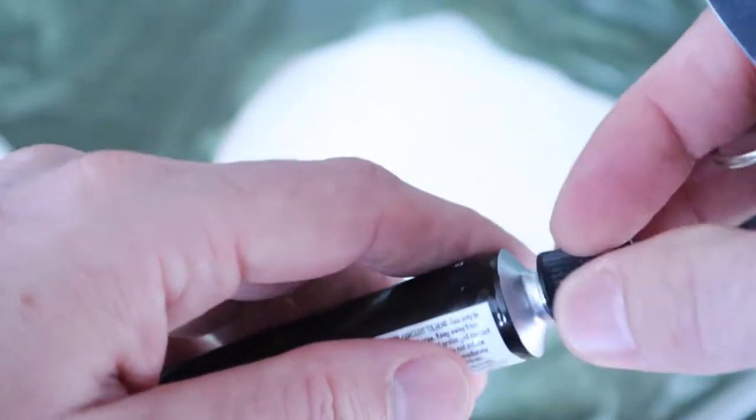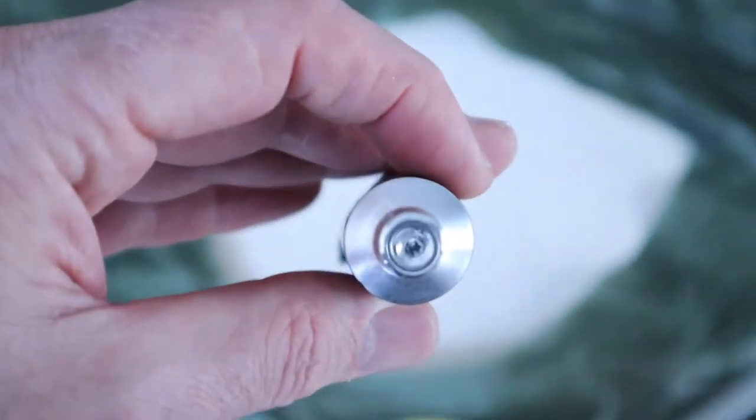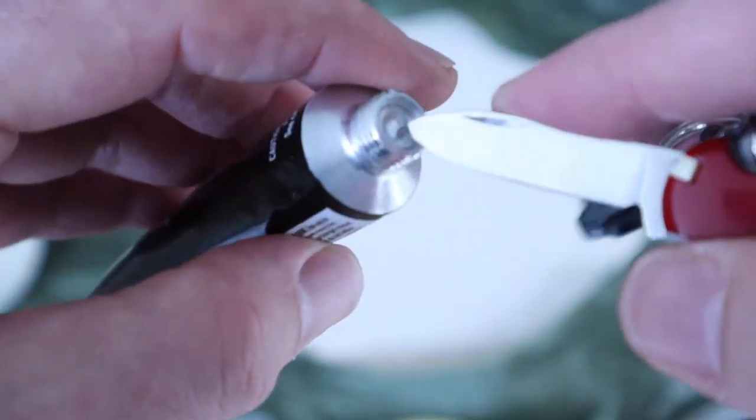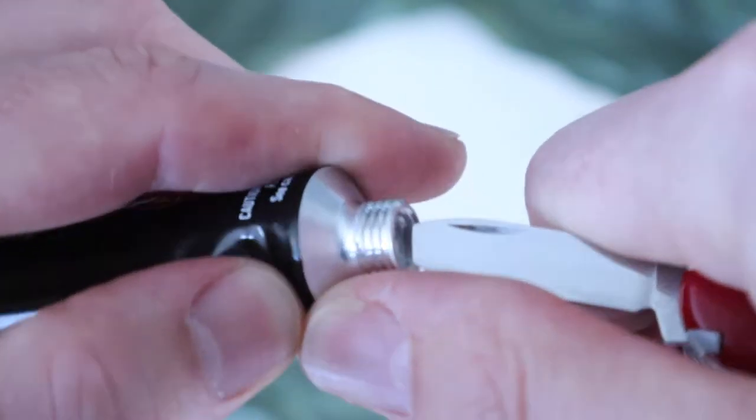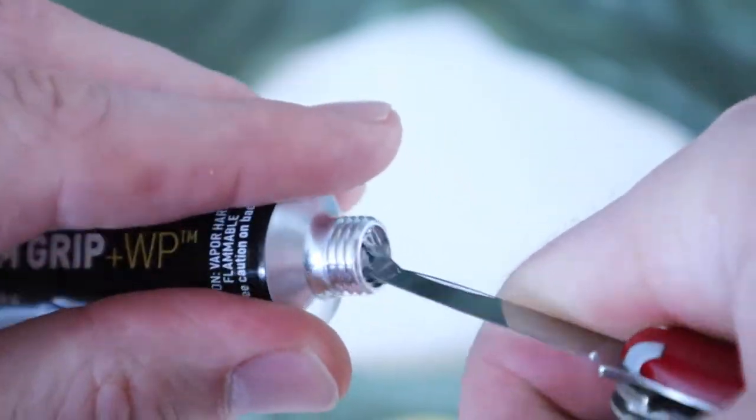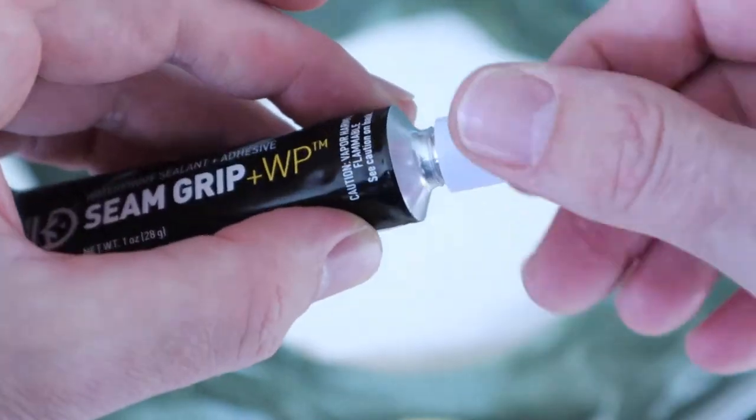Open up SeamGrip and puncture the nozzle with a knife. Now attach the brush head fitting.